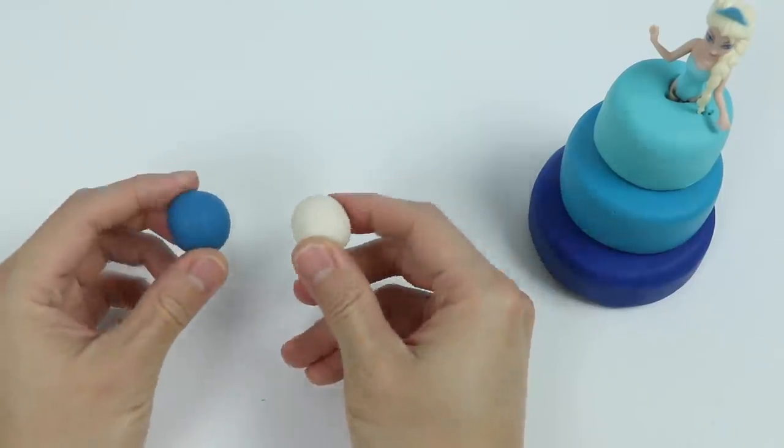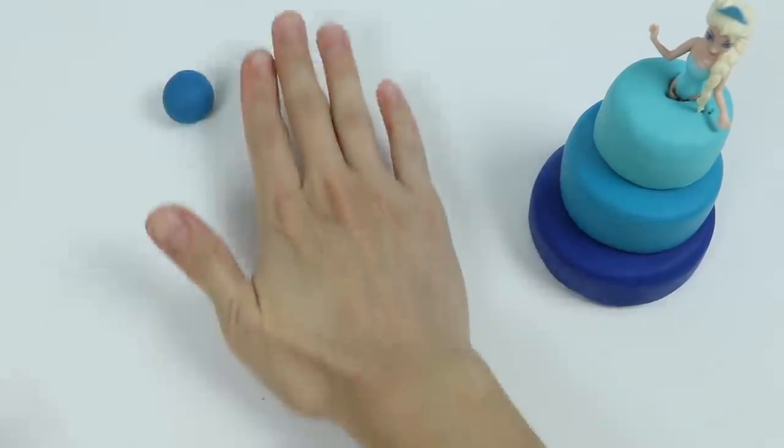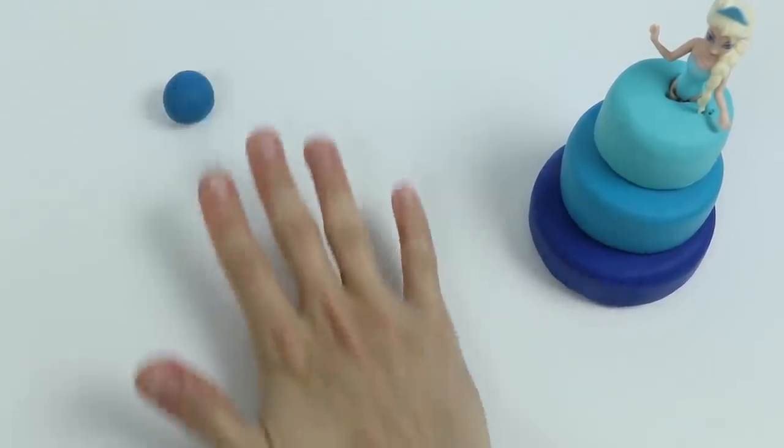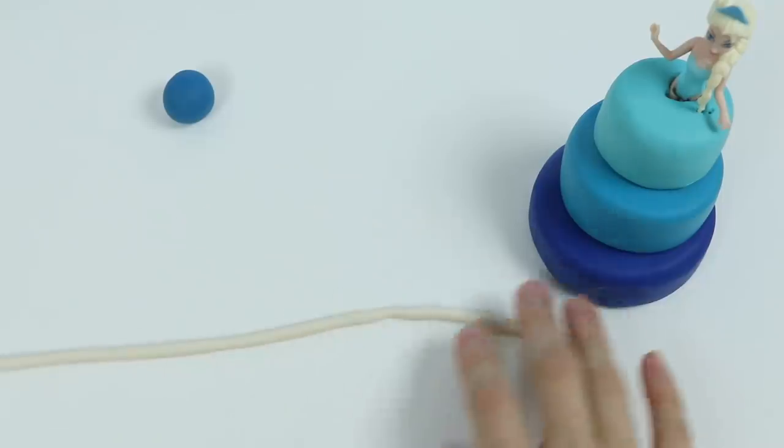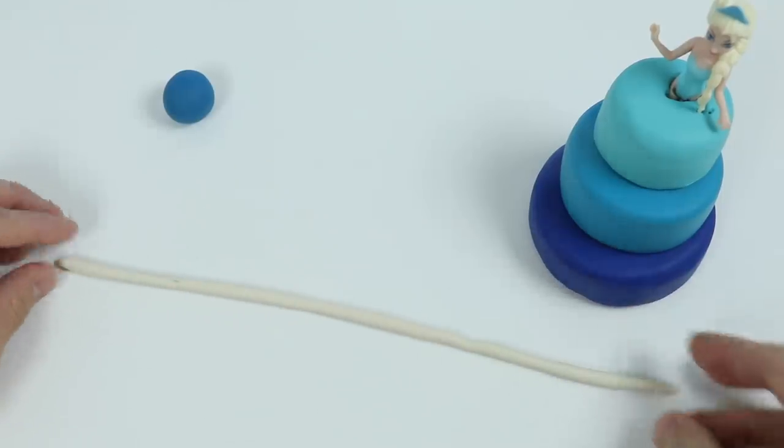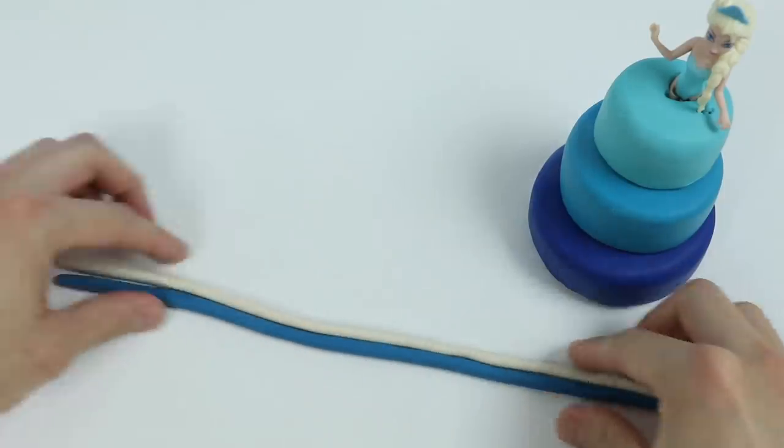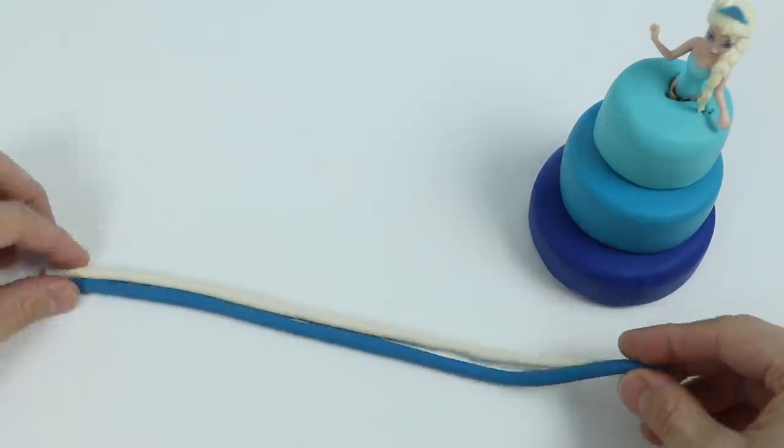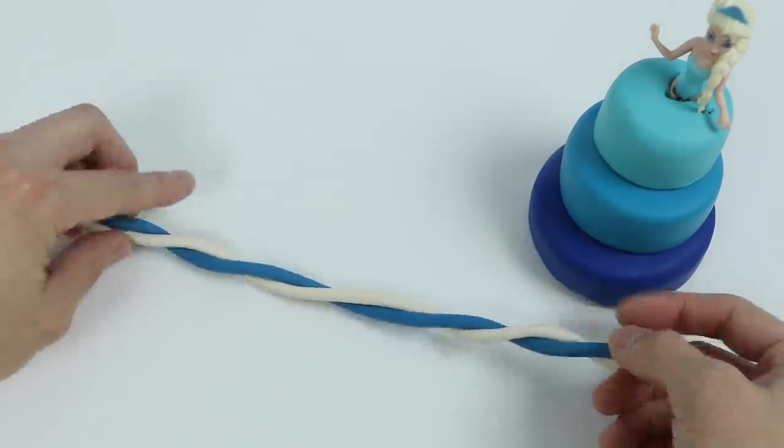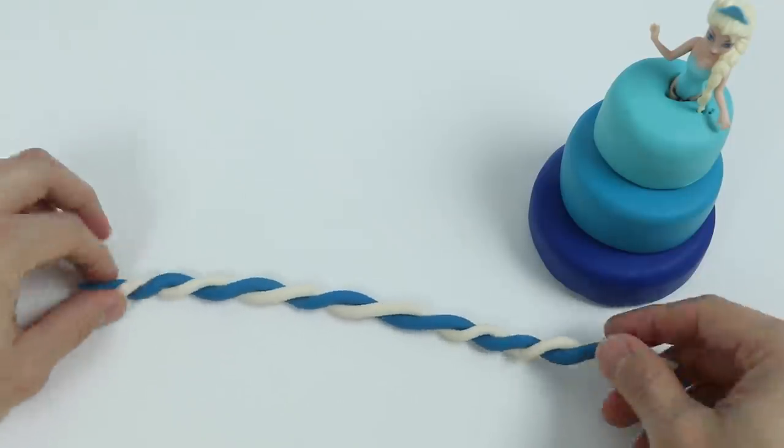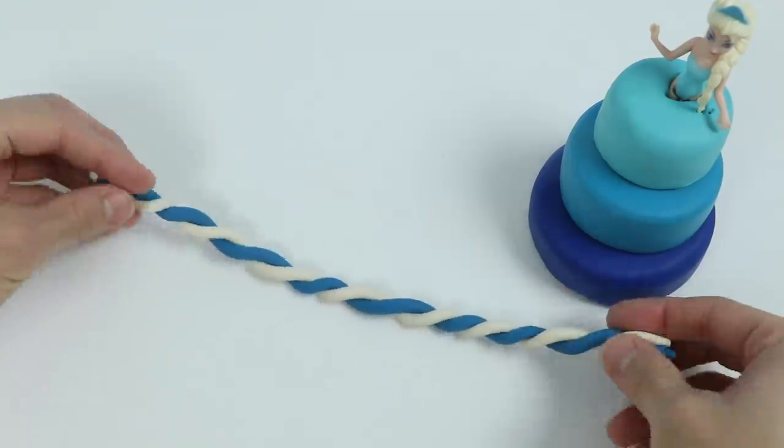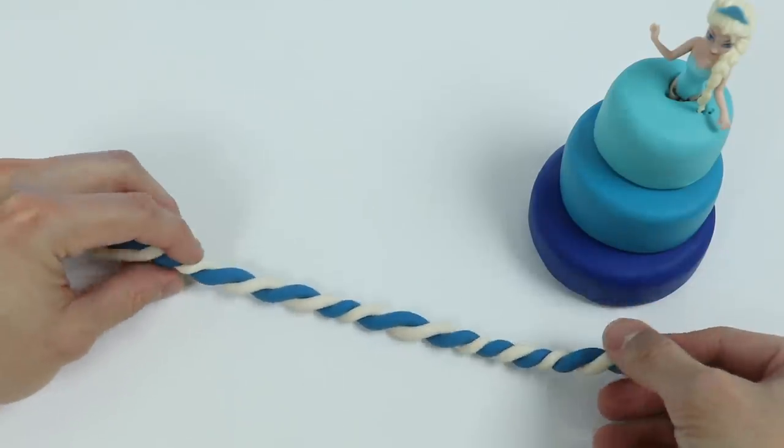Okay, now let's make the cake decorations. We'll need to use some blue and white Play-Doh. Roll these out by hand to get a long noodle shape like this. Once that's finished, we need to twist these two colors together.